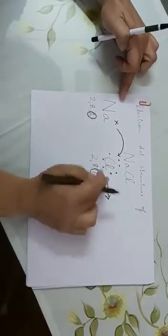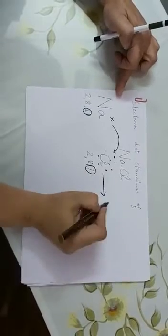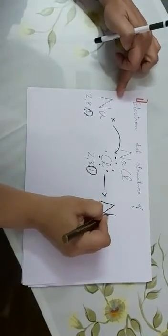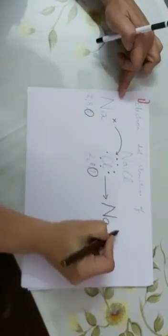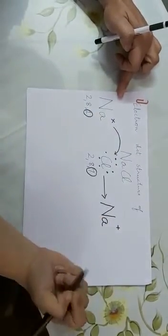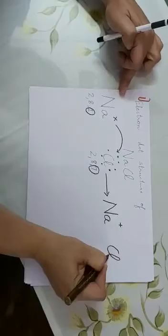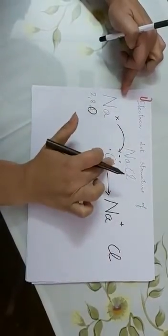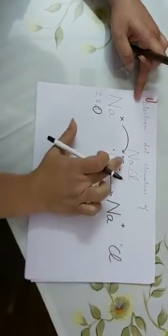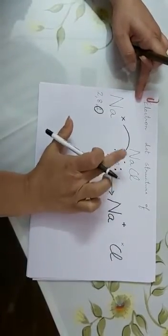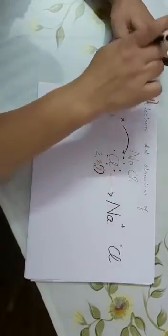And this is the picture after transfer. So sodium after donating electron becomes Na, but now since it has donated, it gets one plus charge. And Cl, now it has taken this electron, so this electron is here.